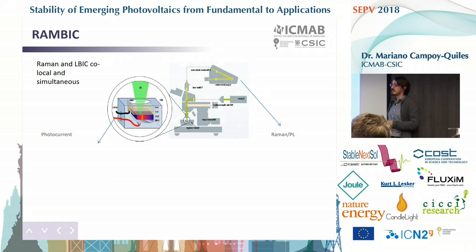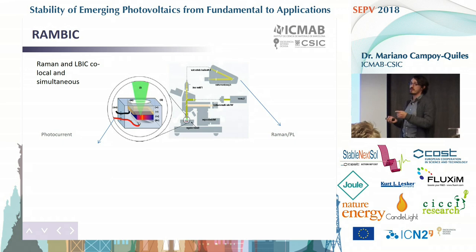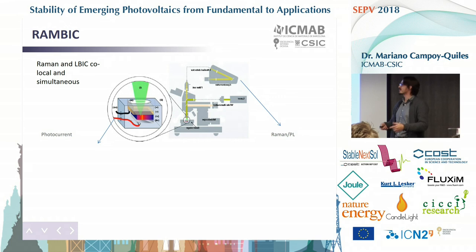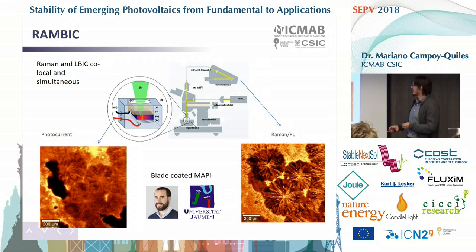Last but not least, we are now one step further in terms of the method. We are now coupling everything together so that with the same piece of equipment we are doing Raman, but then using the light of the Raman laser to measure photocurrent — so in exactly the same device, co-locally and simultaneously, you can measure both Raman and photocurrent. This is an example of some samples that Antonio Guerrero sent us, in which you can see structures that are very clear in both the Raman and the PL. Now the scale is 200 microns, and you have a 1-to-1 correlation between photocurrent and Raman.